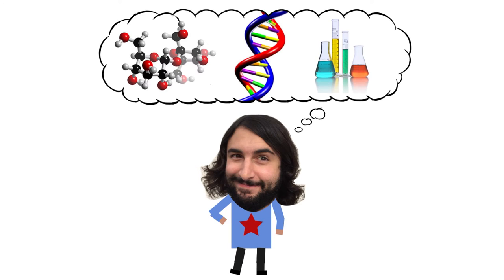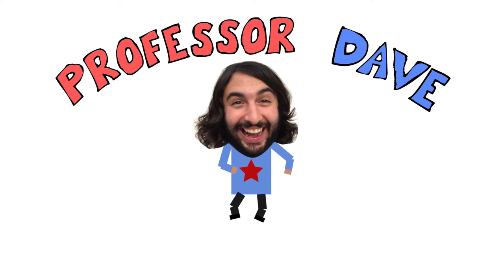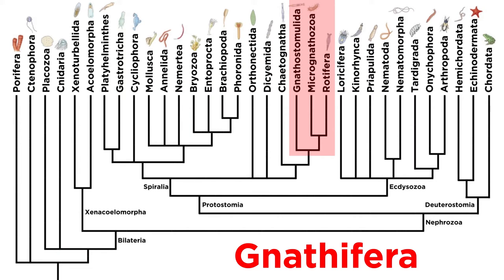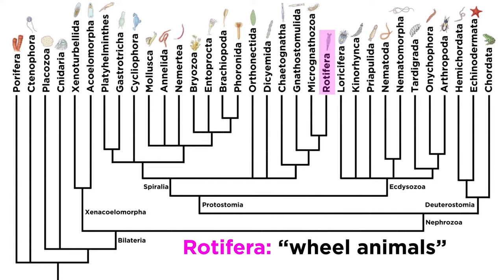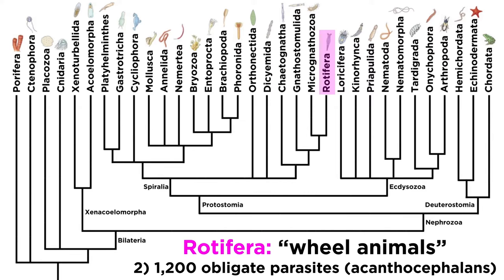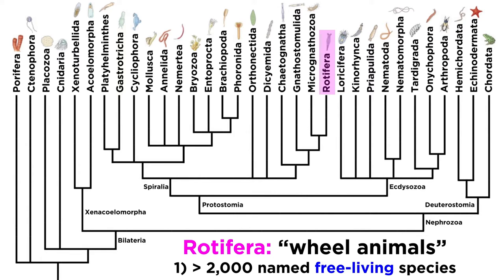Professor Dave Explains. After covering two of the phyla within the clade Gnathifera, it's time to cover the third and final. The so-called wheel animals of phylum Rotifera account for over 2,000 named, mostly free-living species, and an additional 1,200 species of obligate intestinal parasites known as acanthocephalans. In this tutorial, we will focus on some of the free-living, non-parasitic rotifers found all over the world.